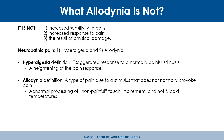Allodynia is placed in a category called neuropathic pain, alongside hyperalgesia — and they tend to go together. Hyperalgesia is when you have an exaggerated response to something that is normally painful. For example, menstrual cramps that hurt much, much worse than usual, or a slight punch on the arm that is normally a little sore but becomes excruciating. It's a heightened pain response.